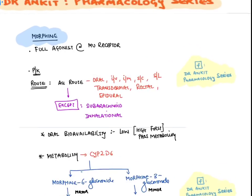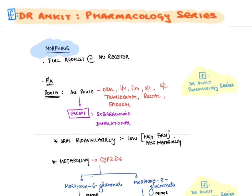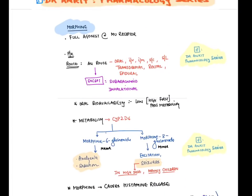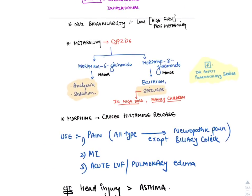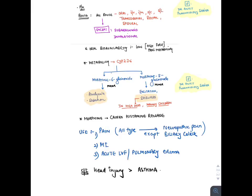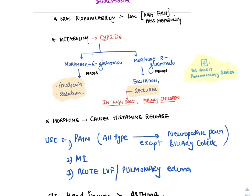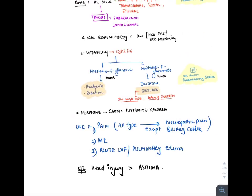Morphine is a full agonist at mu receptors. It is given by all routes except subarachnoid (can cause respiratory depression) and inhalational — if neither of those two are the options, mark sublingual. Morphine is metabolized by CYP2D6, forming two metabolites: morphine-6-glucuronide (main active metabolite, produces morphine's effects) and morphine-3-glucuronide (causes convulsions/seizures, formed in high doses mainly in children). Morphine also causes histamine release from mast cells, potentially causing asthma.